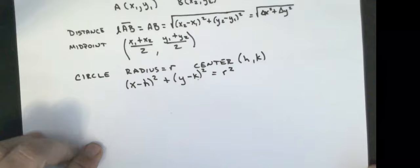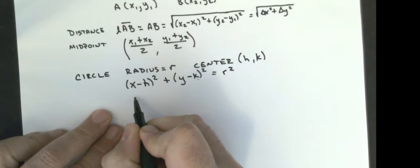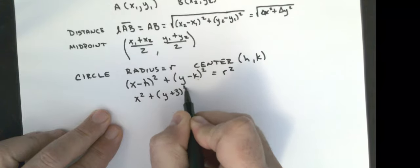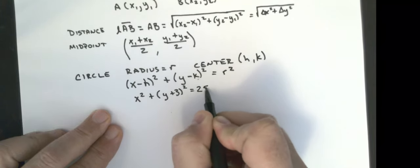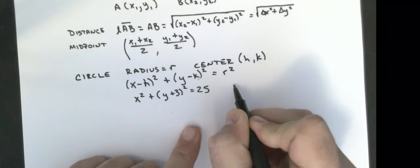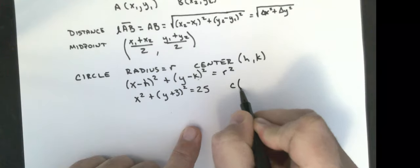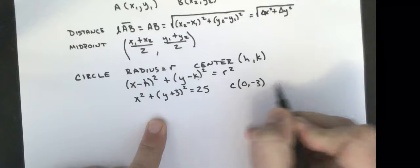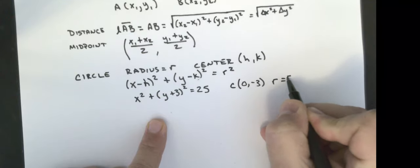For example, if I gave you the equation x squared plus y plus 3 squared equals 25, the center is going to be at the point 0, negative 3, and the radius would be 5.